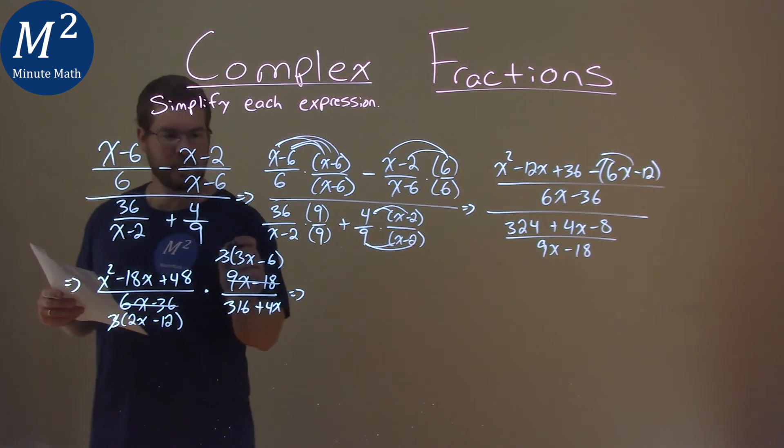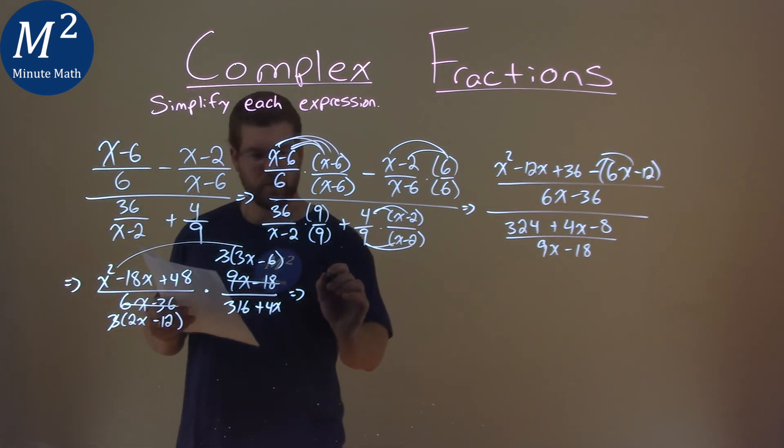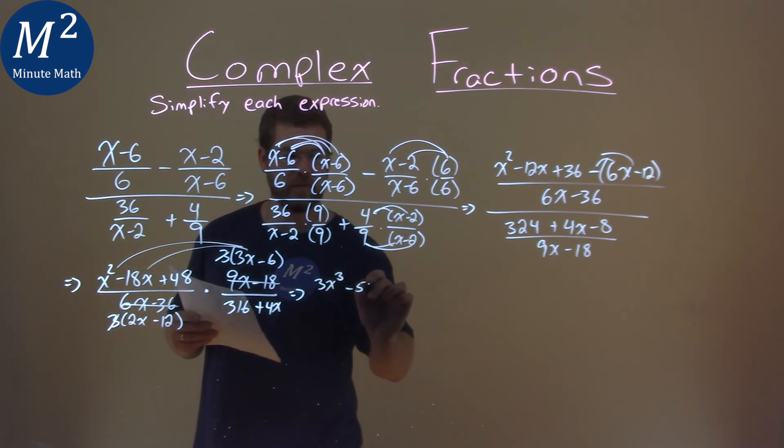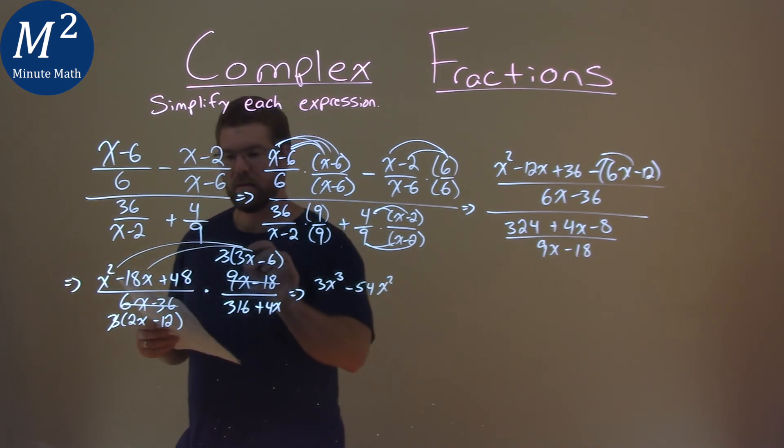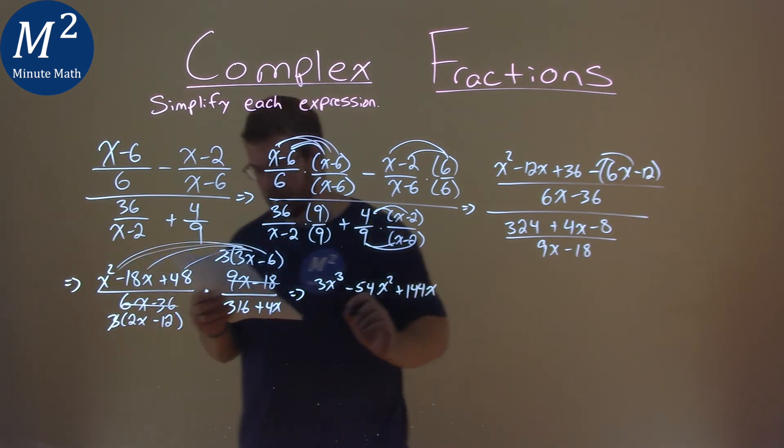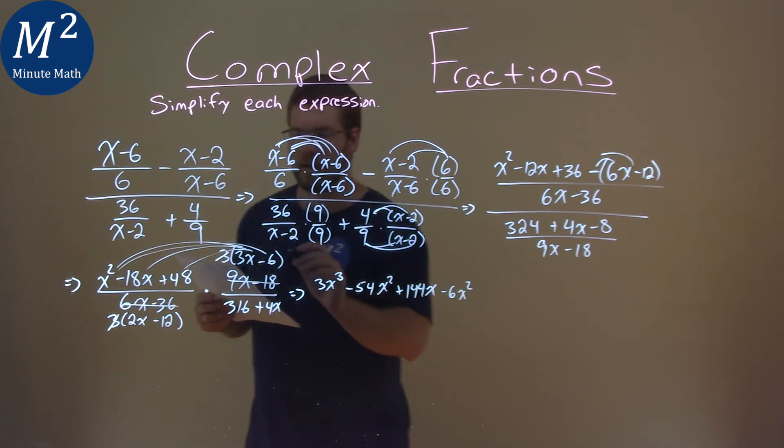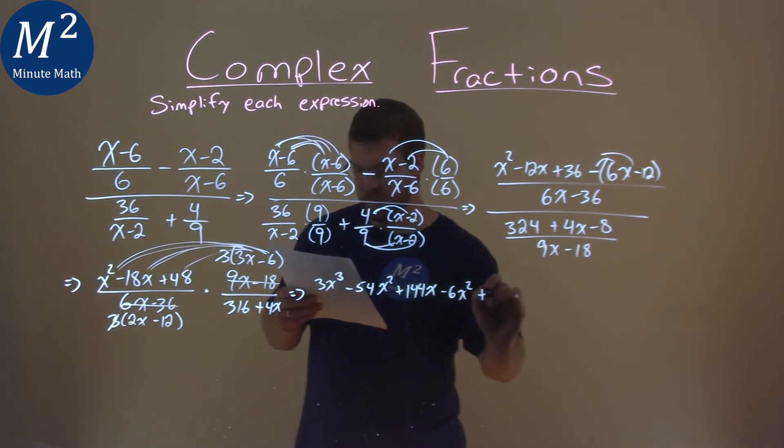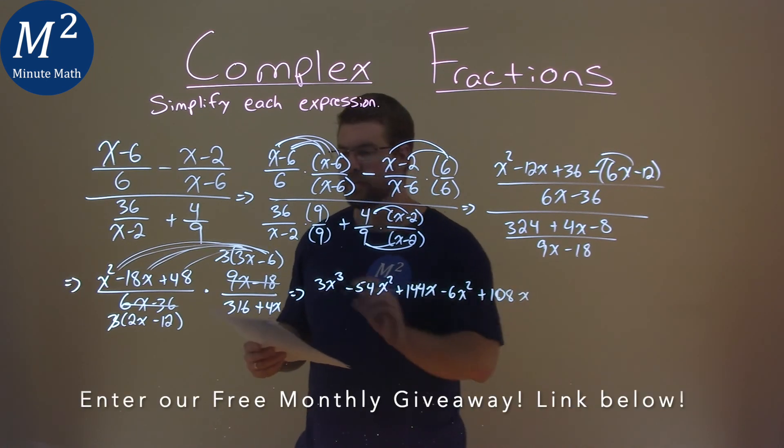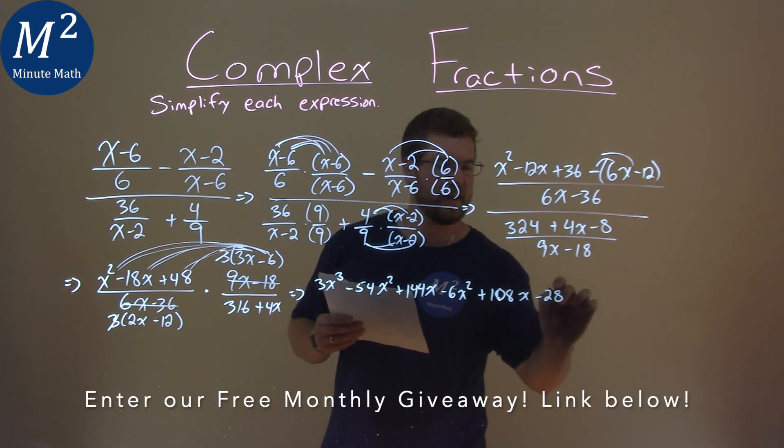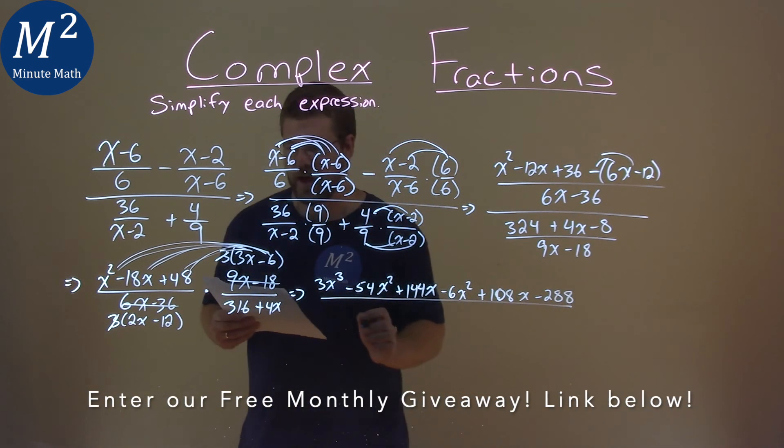3x times x squared is a 3x to the third power. 3x times a minus 18 is a minus 54x squared. And 3x times a 48 is a 144x. Negative 6 times an x squared is a negative 6x squared. Negative 6 times a minus 18 is a positive 108x. And negative 6 times 48 is a minus 288. All of that comes over.